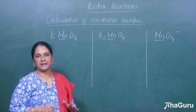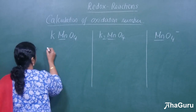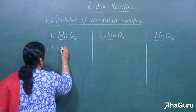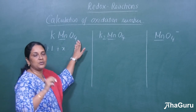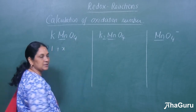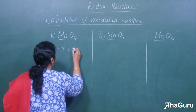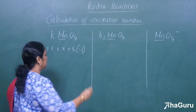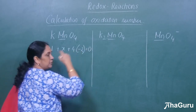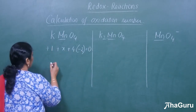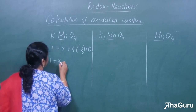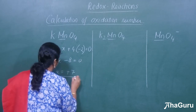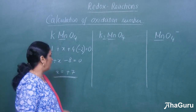We know all alkali metals will have a +1 charge. So for potassium, that is +1. We have to calculate manganese, so let us keep it as x. Oxygen for all compounds is taken as −2, and there are 4 oxygens, so 4 × (−2). The total charge for a neutral compound equals 0. So: +1 + x − 8 = 0, which gives x = +7. The oxidation state of manganese in KMnO4 is +7.